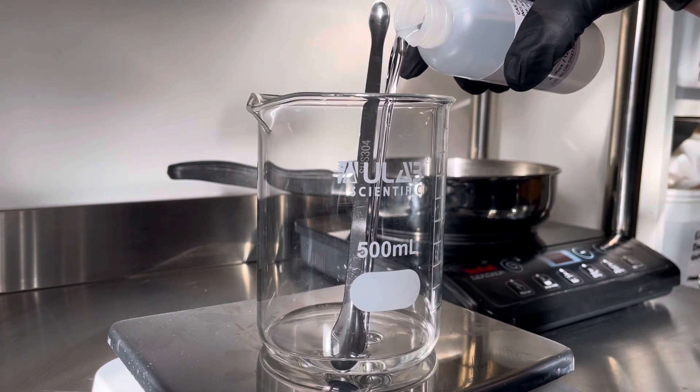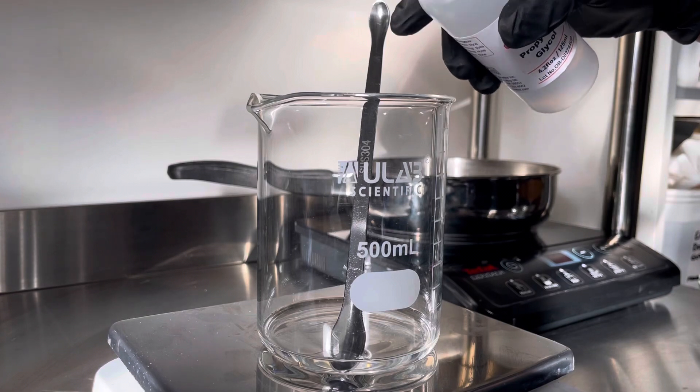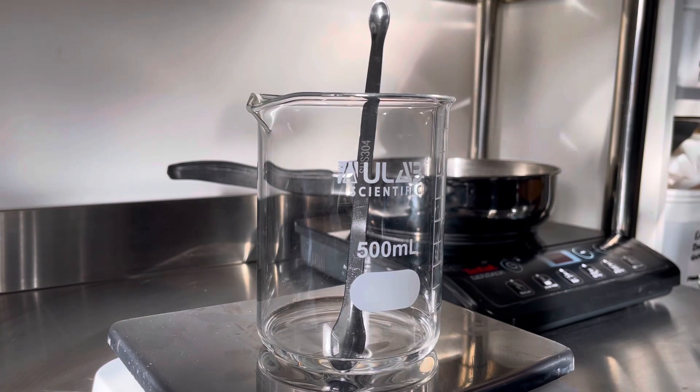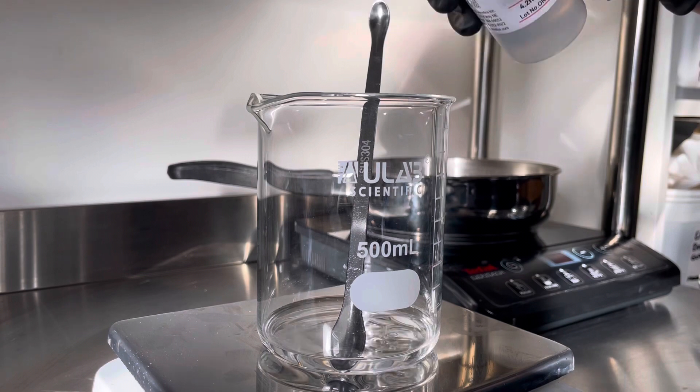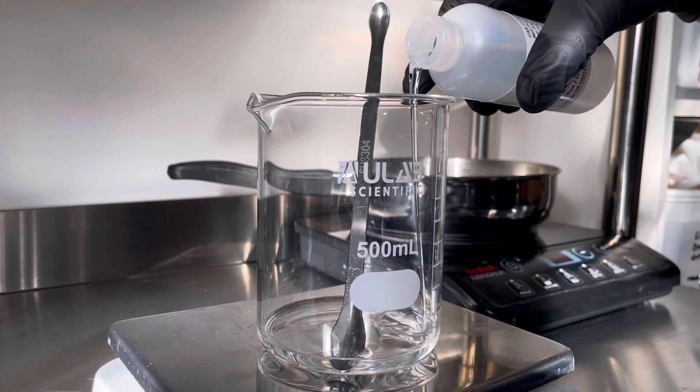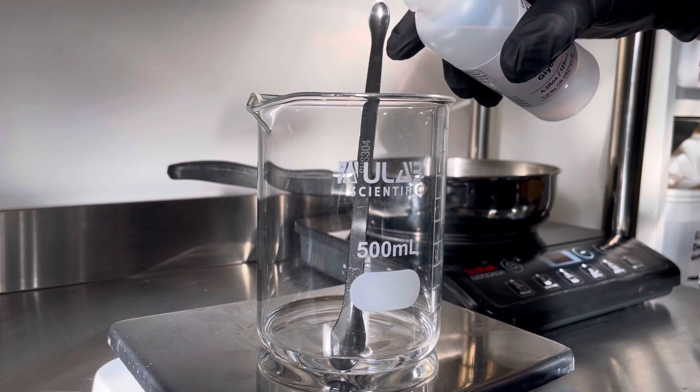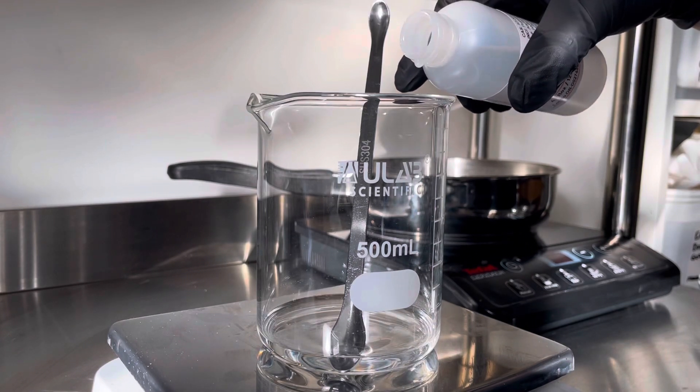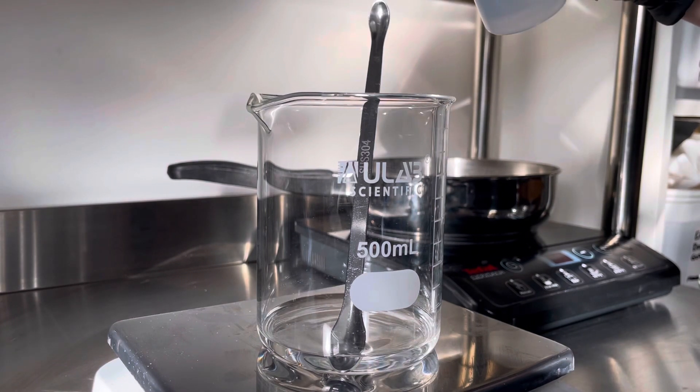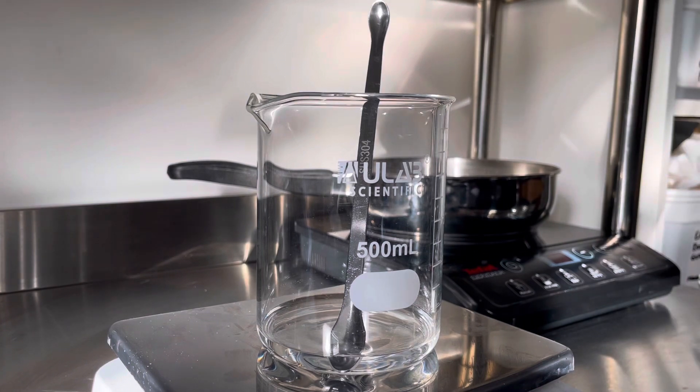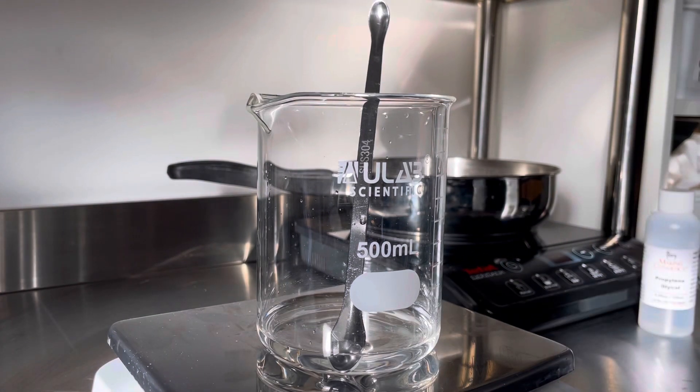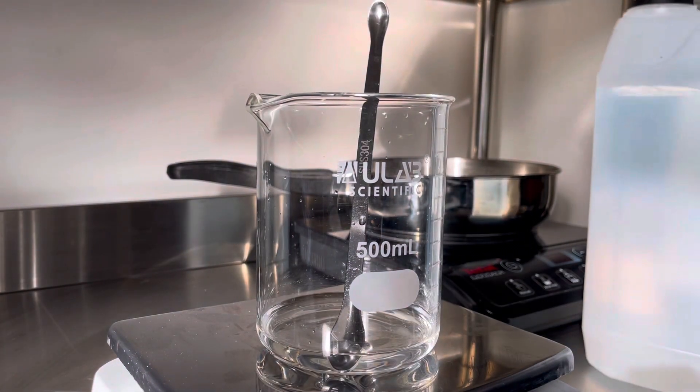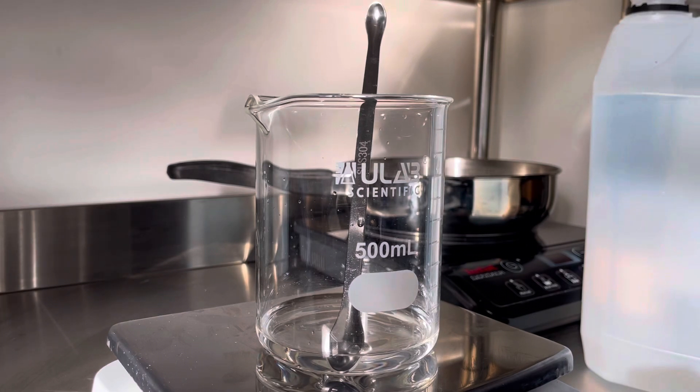So first of all we're adding propylene glycol which is a humectant and basically this helps to dilute and dissolve the sodium stearate. This needs to be heated to between 70 and 80 degrees C or else you're going to have a lot of trouble dissolving this, and you also need to keep stirring it and adding it in tiny, tiny little amounts. If you add it all in one big go it is just going to clump.